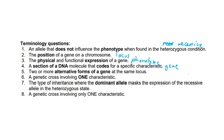Two or more alternative forms of a gene at the same locus — this is an allele, and it's very important to know how to pronounce that. A genetic cross involving one characteristic — this is going to be a monohybrid. If there were many characteristics, it would be a polyhybrid. The type of inheritance where the dominant allele masks the expression of the recessive allele in the heterozygous state — that is complete dominance. And a genetic cross involving one characteristic is once more a monohybrid.